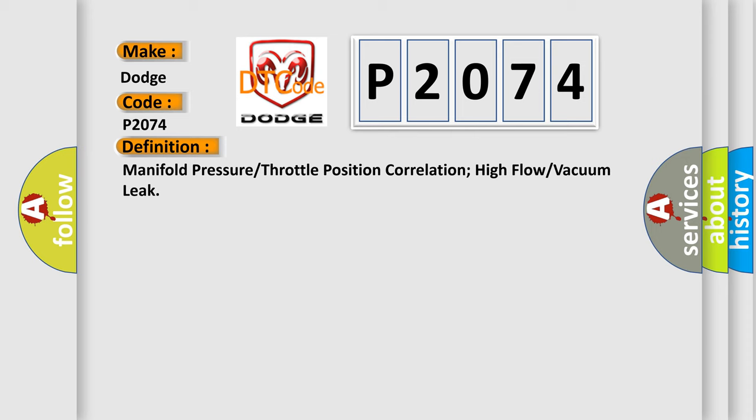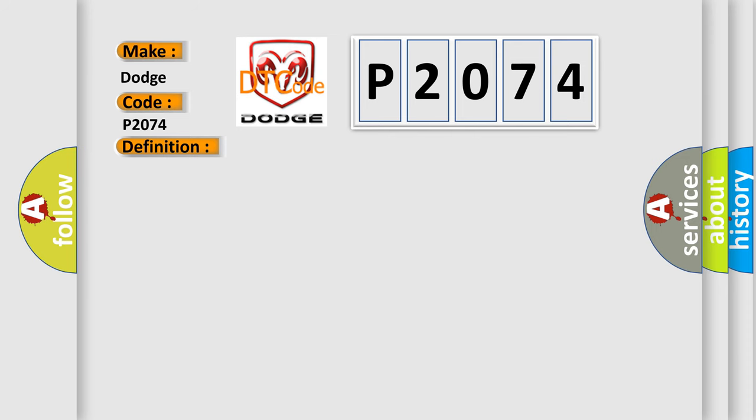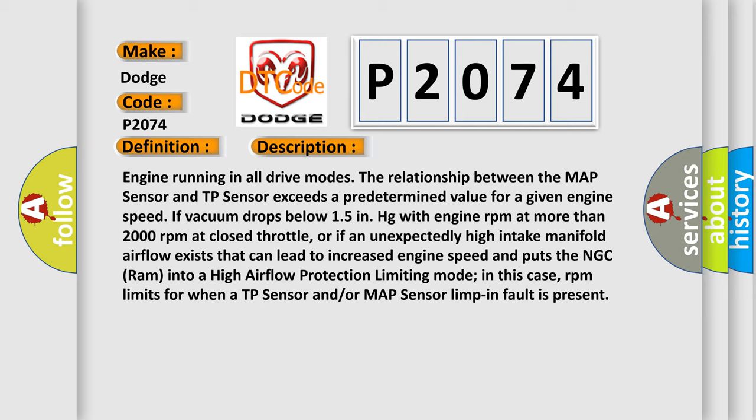Here is a short description of this DTC code. Engine running in all drive modes: the relationship between the MAP sensor and TP sensor exceeds a predetermined value for a given engine speed. If vacuum drops below 15 in-HG with engine RPM at more than 2000 RPM at closed throttle, or if an unexpectedly high intake manifold airflow exists that can lead to increased engine speed and puts the NGC RAM into a high airflow protection limiting mode, with RPM limits applied when a TP sensor and/or MAP sensor limp-in fault is present.